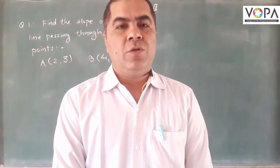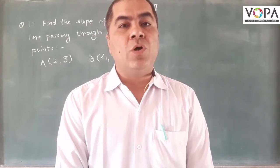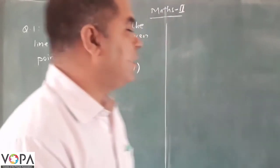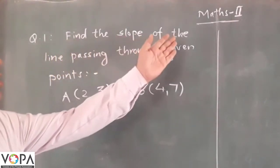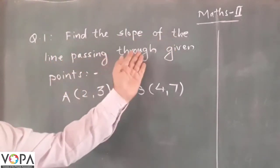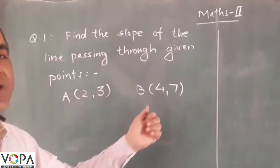Hello dear students. Now we are going to study examples on slope of a line. First, find the slope of the line passing through given points A(2,3) and B(4,7).